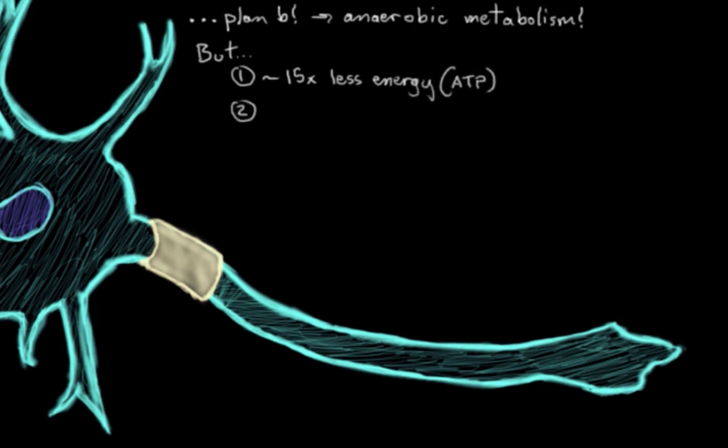And second, it produces a byproduct called lactic acid, which if in high enough quantities, disrupts the normal acid-base balance within the brain and can actually damage your neurons. So we don't want too much lactic acid hanging around. So I mentioned that this cell has less energy production happening. How exactly does this change the cell's function? Well, in a few different ways.